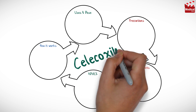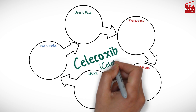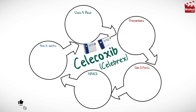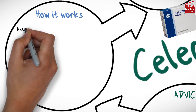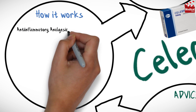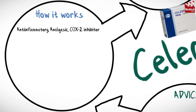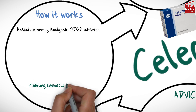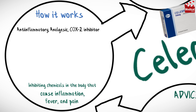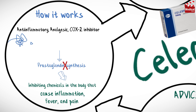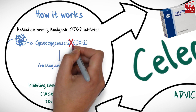In this video, we'll briefly discuss what Silicoxib is, what it's used for, how it works, the dose, side effects, contraindications, and precautions. Silicoxib is an anti-inflammatory analgesic COX-2 inhibitor. It works by inhibiting chemicals in the body that cause inflammation, fever, and pain, through inhibition of prostaglandin synthesis, primarily via inhibition of the COX-2 enzyme.